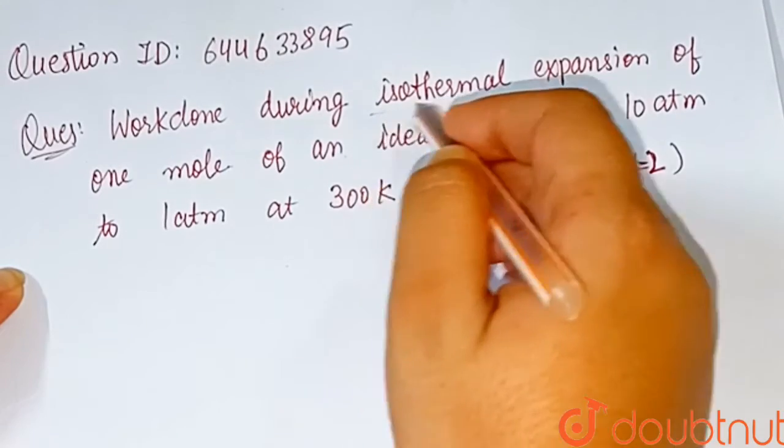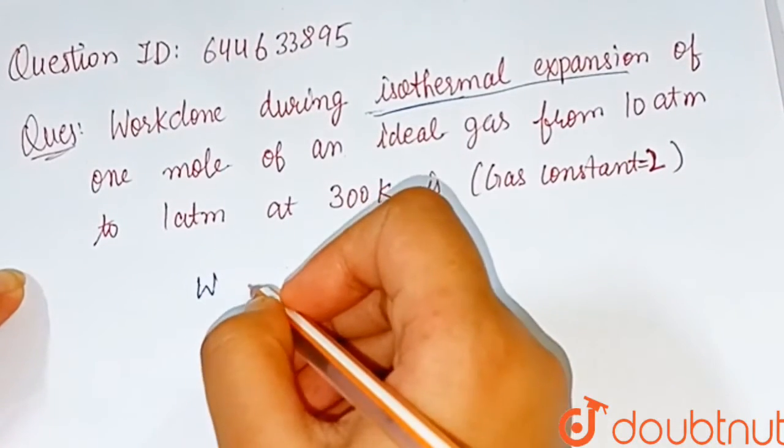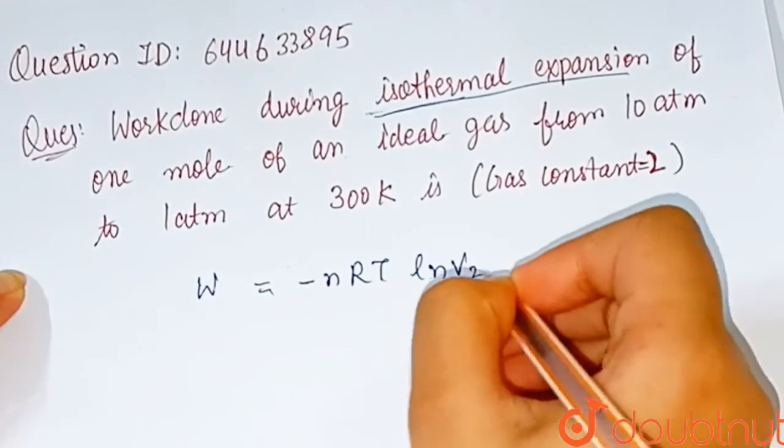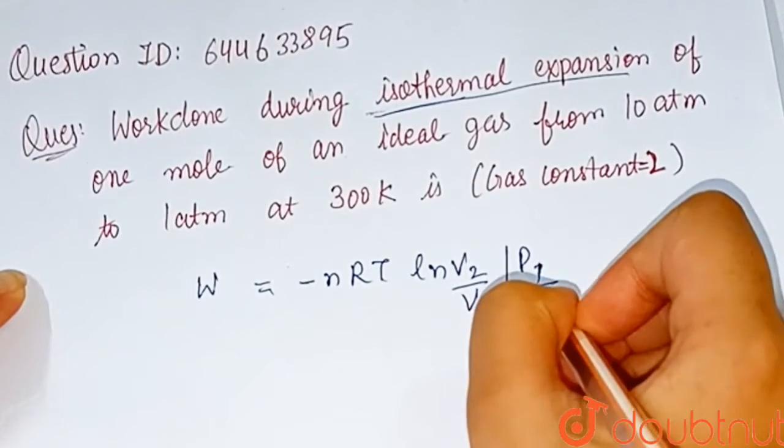As we know, the work done during isothermal expansion formula is W equals minus nRT log V2 by V1, or P1 upon P2.